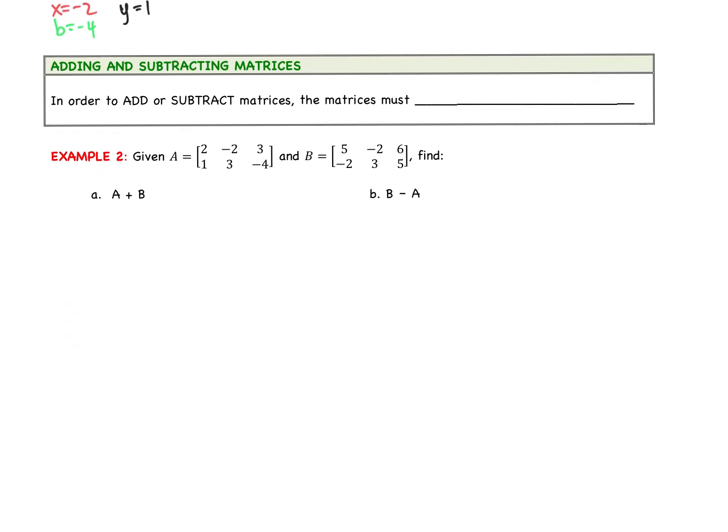Next thing I want to talk about is adding and subtracting matrices. In order to add or subtract matrices, the matrices must have the same dimensions. So example two, it says given matrix A and matrix B. We're going to find the addition and we're going to find the subtraction. So first question to ask ourselves, can we add and subtract these? Dimensions of the first matrix, there are two rows and three columns. Second matrix has two rows and three columns. They're the same, so yes, we can add and subtract these two matrices.